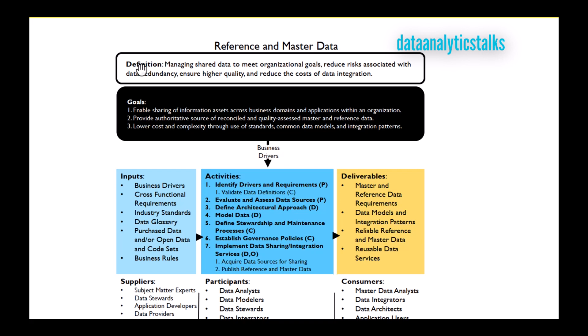So we understand that reference data and master data are shared data in the organization, and master data management is managing that shared data — meaning reference data and master data — to meet organizational goals, which reduce the risk associated with data redundancy, ensure high quality, and reduce the cost of data integration. The framework also gives certain goals for master data management. The first goal is to enable sharing of information assets across business domains and applications within the organization.